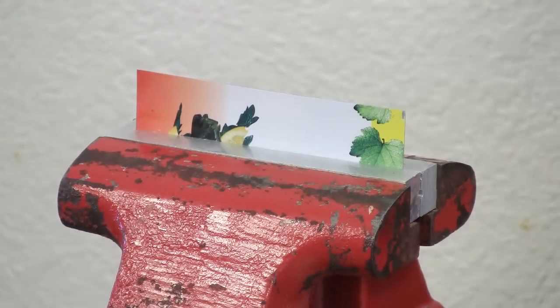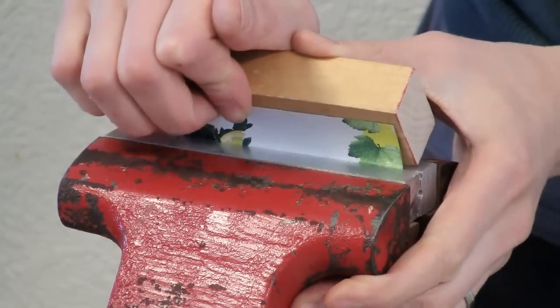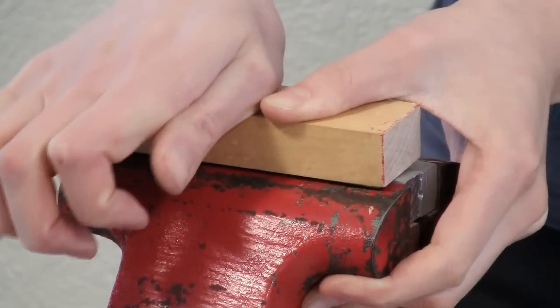Your vise and your pliers are great for making 90 degree bends, but what if you want a sharper angle? Good question! The way you do this is to start the bend in the vise, taking it as far as you can.